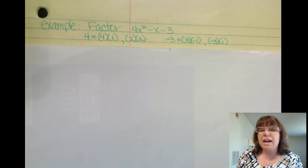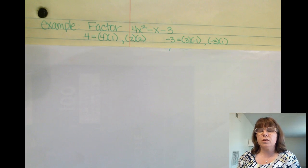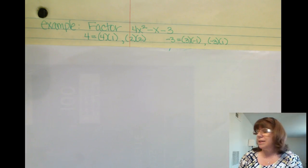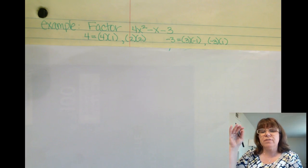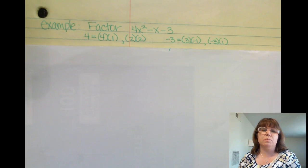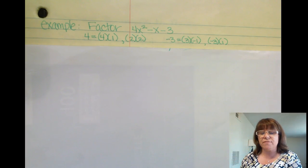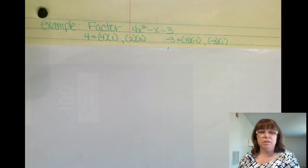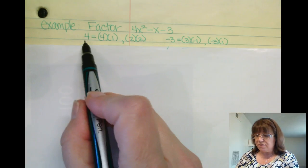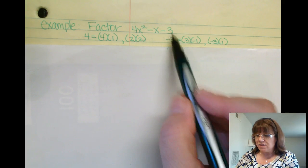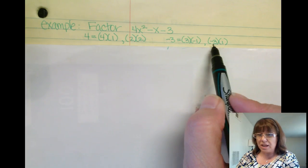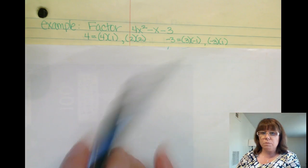Going back to our factors where the first coefficient of the first term is not a 1 and the last term is not a 1, what we can do is write down every possible factor that it could be, every possible combination of factors. So I do have the factors of 4 are 4 and 1, and 2 and 2. The factors of negative 3 are 3 and negative 1, and negative 3 and 1.